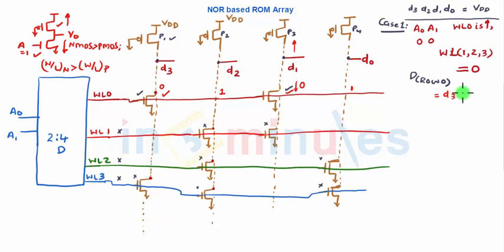...is given by D3, D2, D1, and D0, which is nothing but 0, 1, 0, 1. It again gives us the verification that wherever the transistor is present at the intersection of the row and the column, I can have my 0. At other places where the transistor is not present, I will be able to have my 1, which will be written.